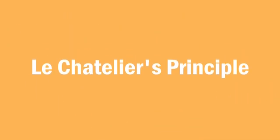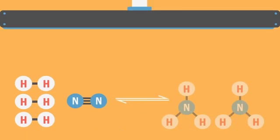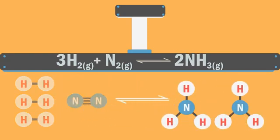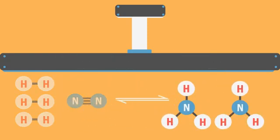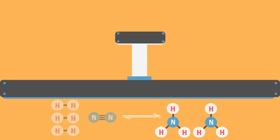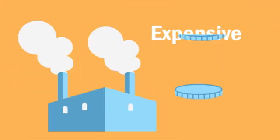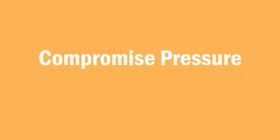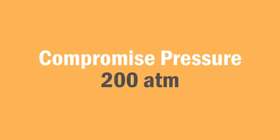Le Chatelier's principle tells us that increasing pressure will favor the side with fewer moles — for our case, the production of ammonia. It would make sense to conduct the reaction at a very high pressure, but we must also remember that it is expensive to build and operate a plant that can withstand such high pressures. Therefore, a compromised pressure of 200 atmospheres is used.